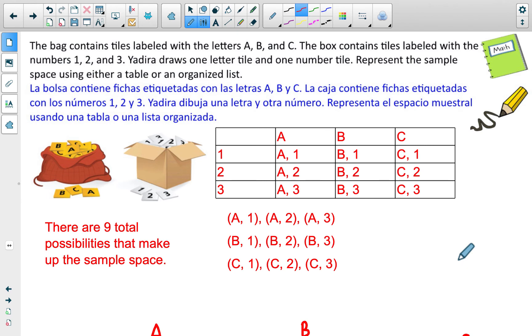The sample space for this example is made up of nine total possibilities. If you used a table, it could have looked something like this. You could also switch and put the letters vertically and the numbers horizontally and it would have created the same combinations. This is the list right here. I just started writing A and then 1, 2, 3, B, 1, 2, 3, and then C, 1, 2, 3, which got the nine possibilities.